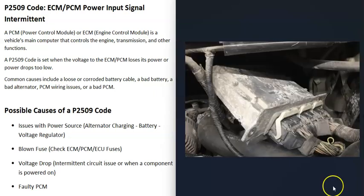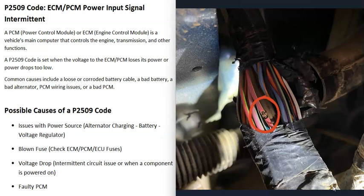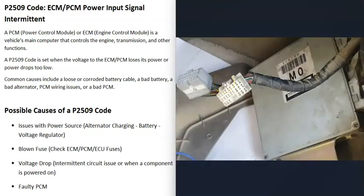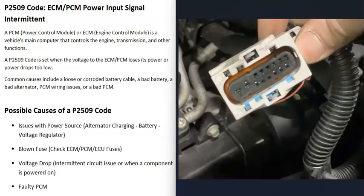Another possible cause is a wiring problem creating a voltage drop. There could be a circuit issue or a bad component that causes a voltage drop when powered on, affecting power to the computer. For example, if you turn on the headlights and the check engine light comes on with a P2509 code, the lights may be causing the drop. Wires going to the ECM or PCM can also rub on metal and short out, connectors can come loose, or pins inside the plugs can become loose.